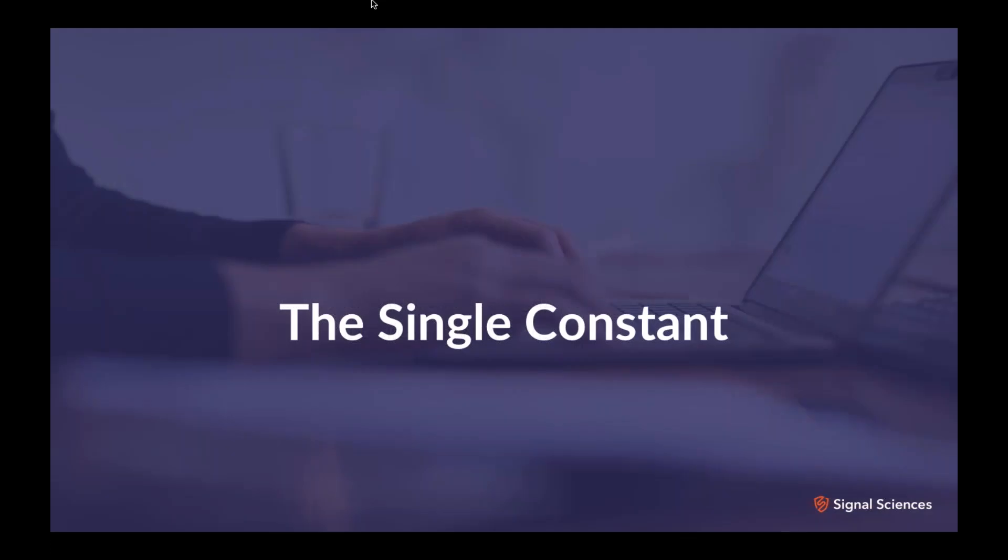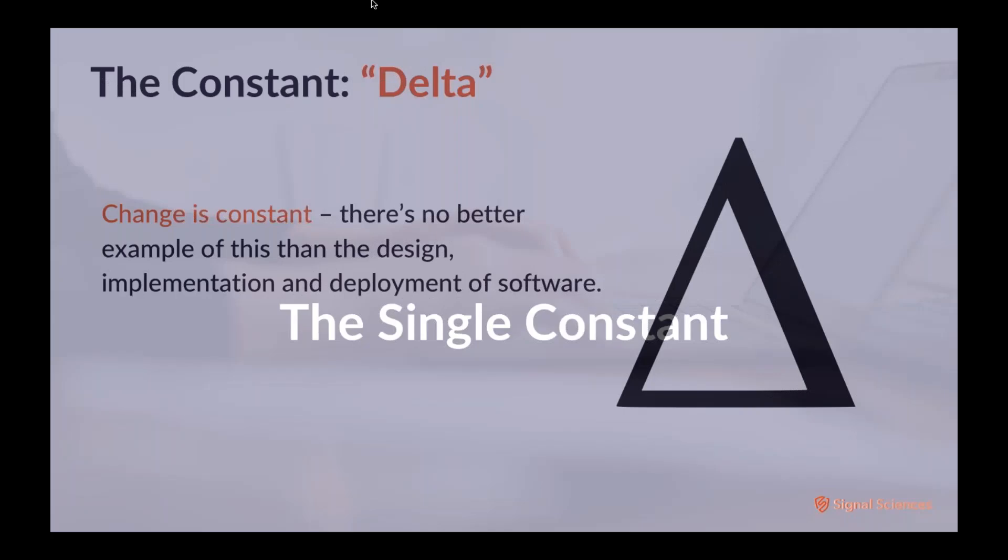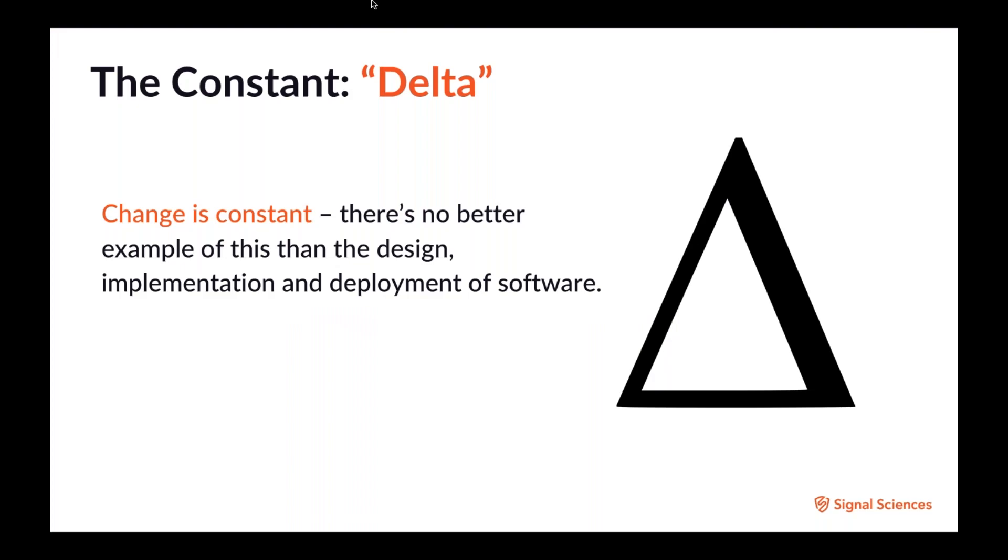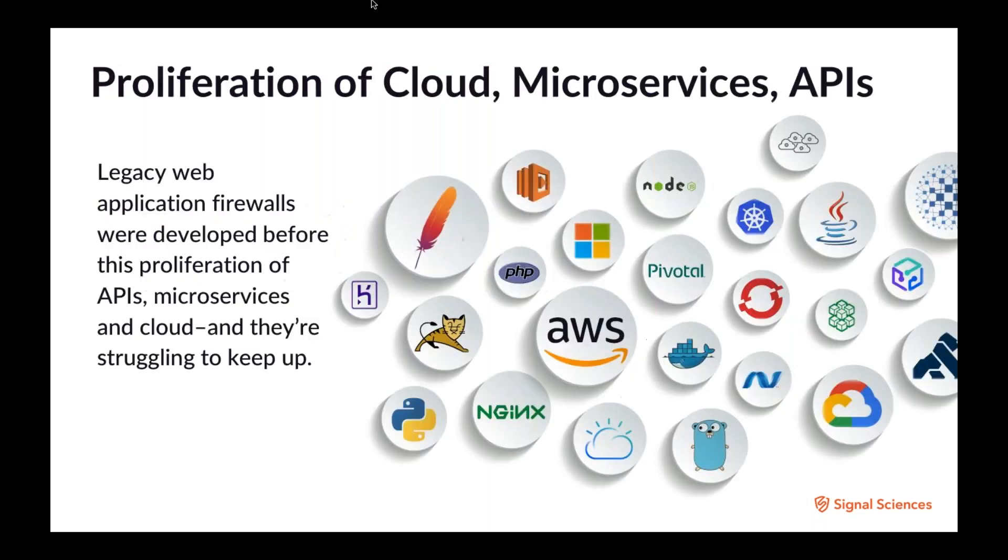So let's talk about the single constant. As in life, with technology and software development, change is constant, the delta. And there's just no better example of it than in software design, implementation, and deployment. We've seen in the last decade a proliferation of cloud and microservices and APIs. And what this means, basically, is that legacy web application firewalls were developed before all of this. And they're just struggling to keep up with this change.